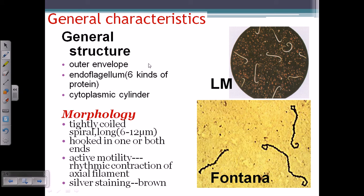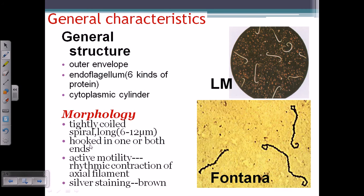The general characteristics: they are spirochetes, so they have a spiral structure, as we can clearly see in this picture. An important property is that they have a circular loop at their terminals — that is unique about them. They also have an outer envelope and endoflagella, common to all spirochetes. Specifically for Leptospira, we see this spherical or loop-like structure at both terminal points, and they are longer than other spirochetes.